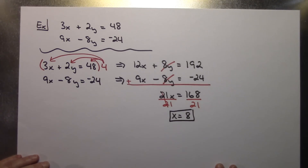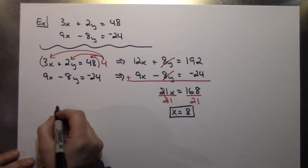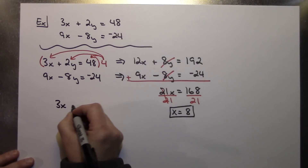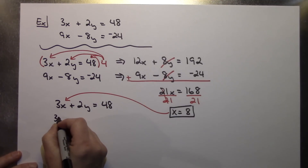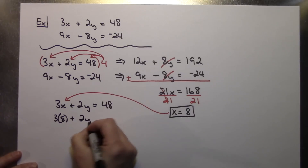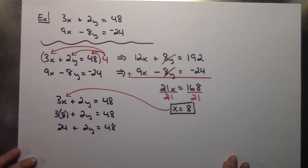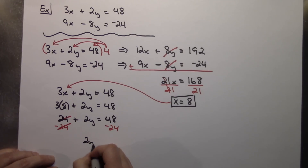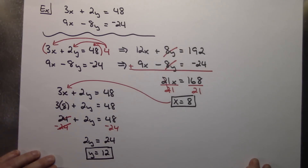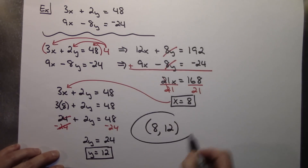I've got my x coordinate of the solution. Now I'll plug 8 back into the top equation to find y. So 3x plus 2y equals 48 becomes 3 times 8 plus 2y equals 48, which is 24 plus 2y equals 48. Subtract 24 from both sides: 2y equals 24. Divide both sides by 2: y equals 12. I've found my y coordinate, so I write the final answer as the ordered pair (8, 12).